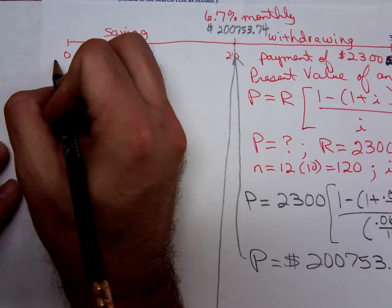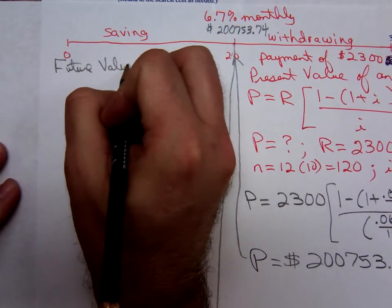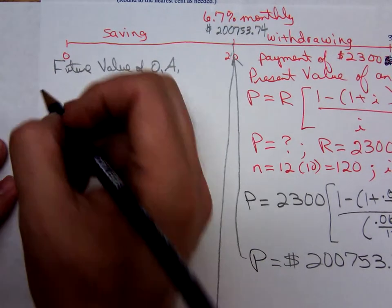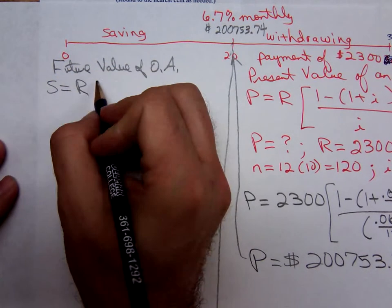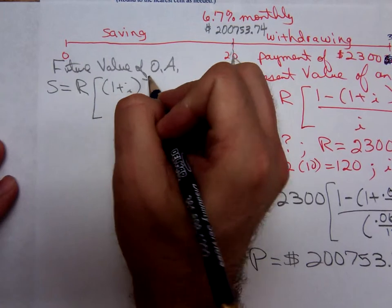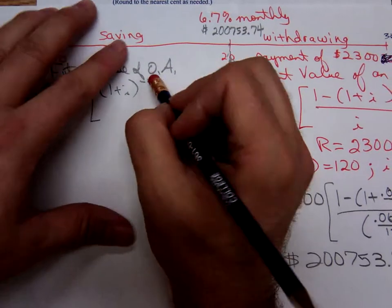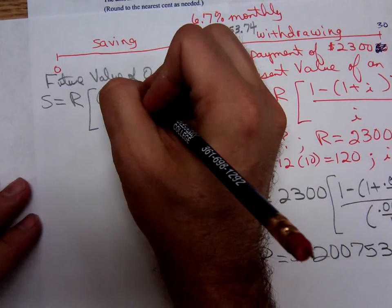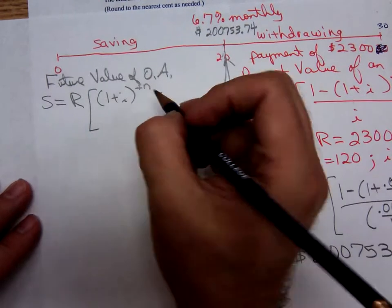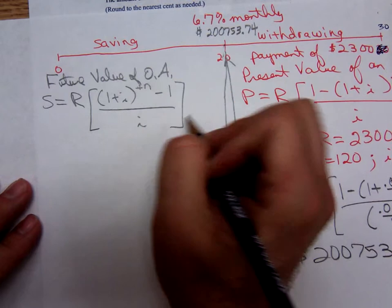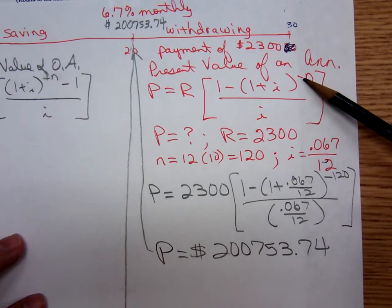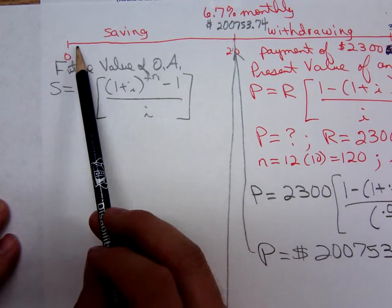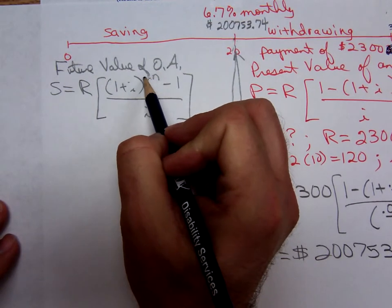I'll write that here. Future value of ordinary annuity. And we recall that formula. S equals R times, not a negative N. I'm just going negative N crazy, aren't I? That's just a positive N. That's a positive N minus 1 all over i. It's the present value of an annuity formula that has a negative exponent. The future value, the time is increasing. That is a positive exponent. That is a positive N.